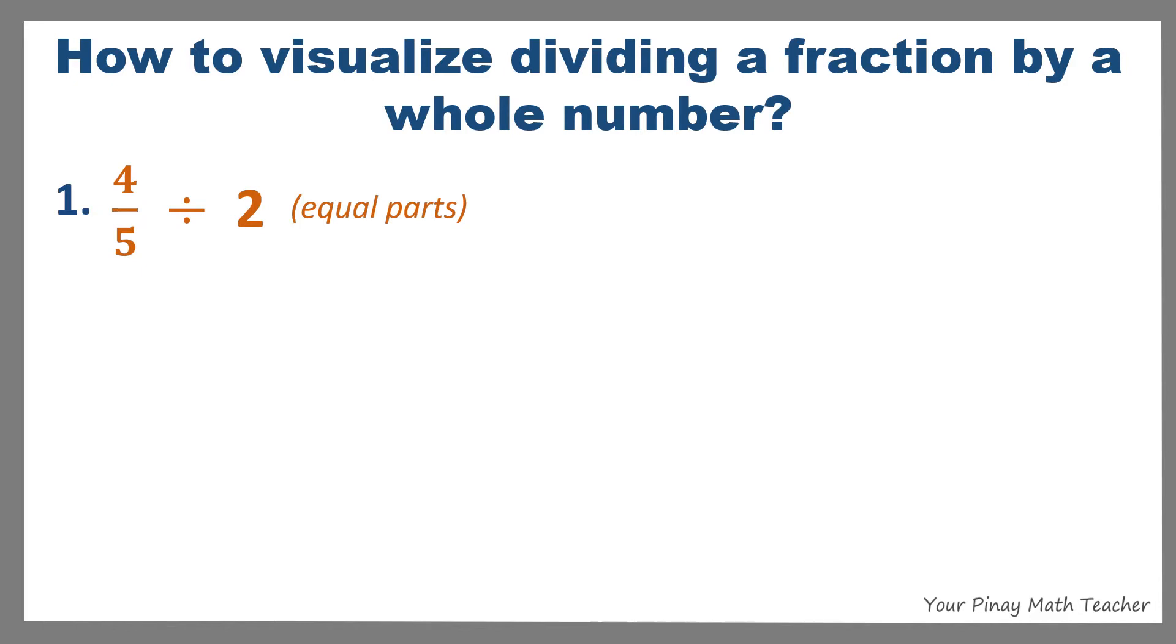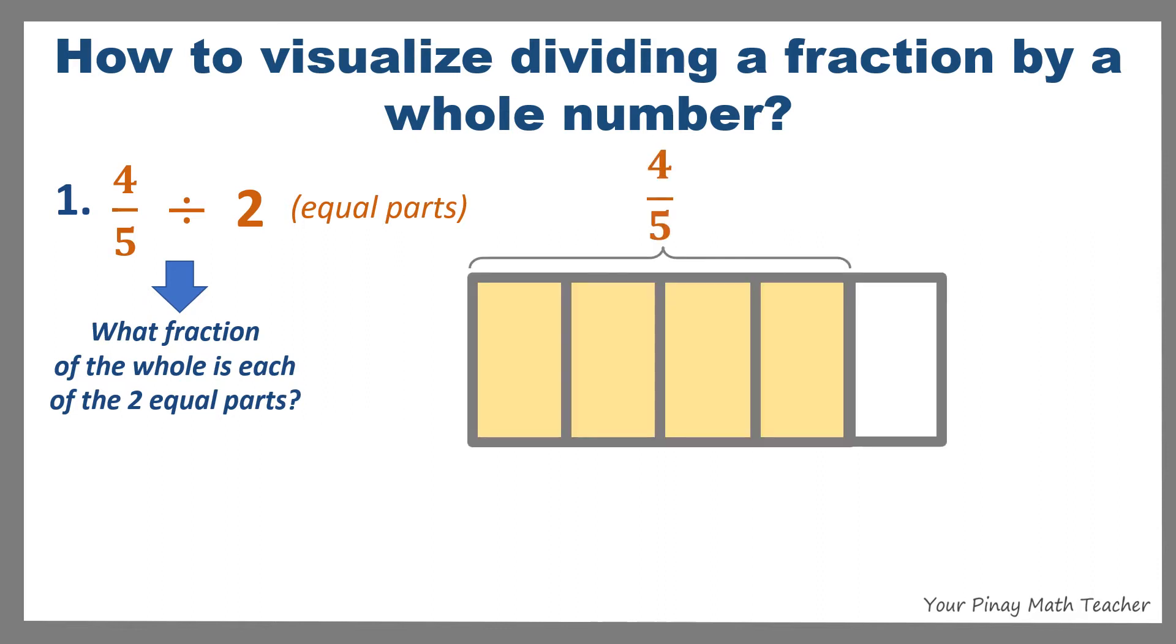This may represent 4 out of 5 slices of pizza shared equally between 2 persons. This also answers the question, what fraction of the whole is each of the 2 equal parts? Here, the shaded part is 4 fifths, and this is divided into 2 equal parts.